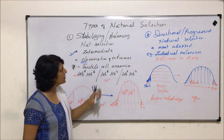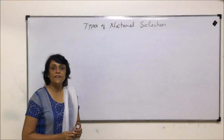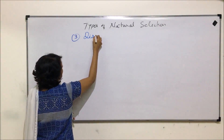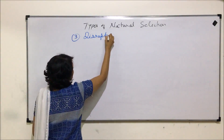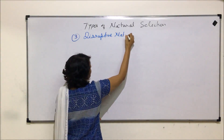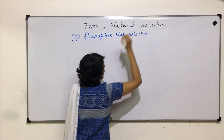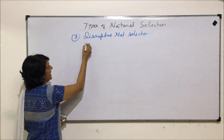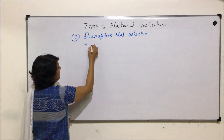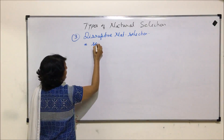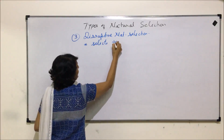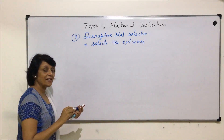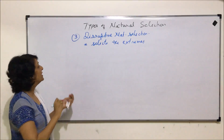The third type of natural selection is known as disruptive natural selection. In this type, nature selects the extremes and eliminates the intermediate type.